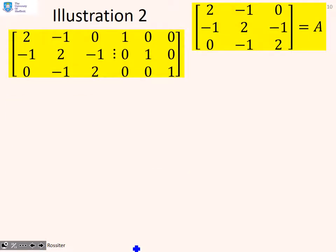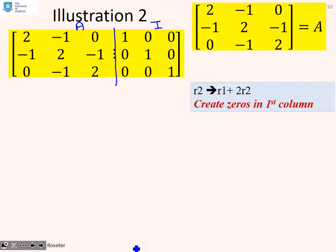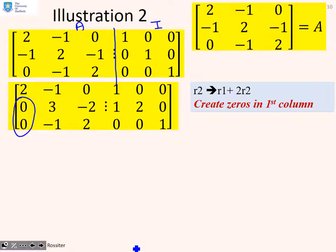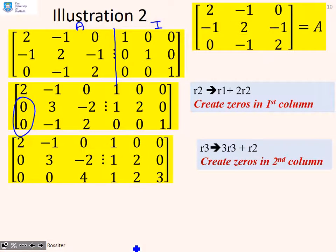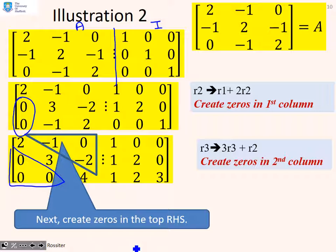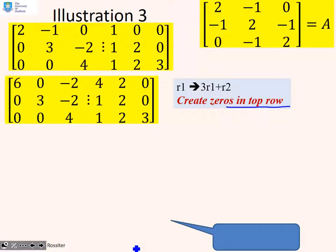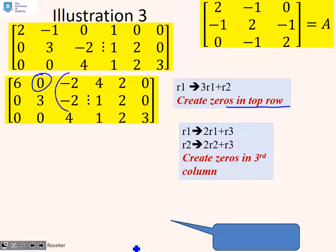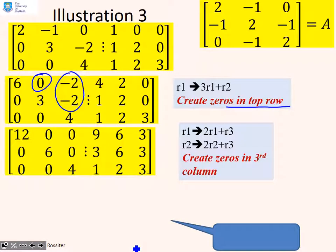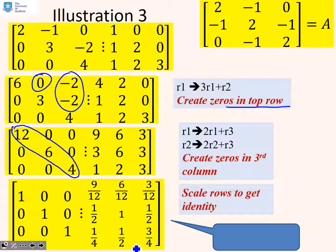A final illustration. Again we form the augmented matrix by placing A next to I. We create zeros in the first column with a row operation, then zeros in the second column, giving us lower-triangular form. Next, our objective is to create zeros in the upper-right part: we choose a row operation to create zeros in the top row, then row operations to get zeros in the third column. The matrix is now diagonal. We scale the rows to get the identity on the left, and the matrix on the right is the matrix inverse.